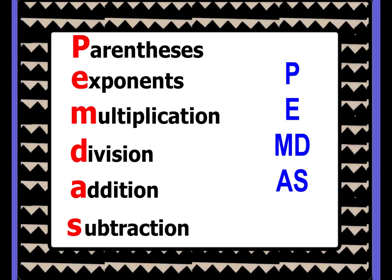Just a quick review on order of operations. Do you remember PEMDAS? Parentheses, exponents, multiplication and division, addition and subtraction. I write mine vertically with the M and the D together, because multiplication and division happen at the same time — left to right, like you're reading a book, whichever one occurs first. Same thing for addition and subtraction: left to right, whichever one occurs first.